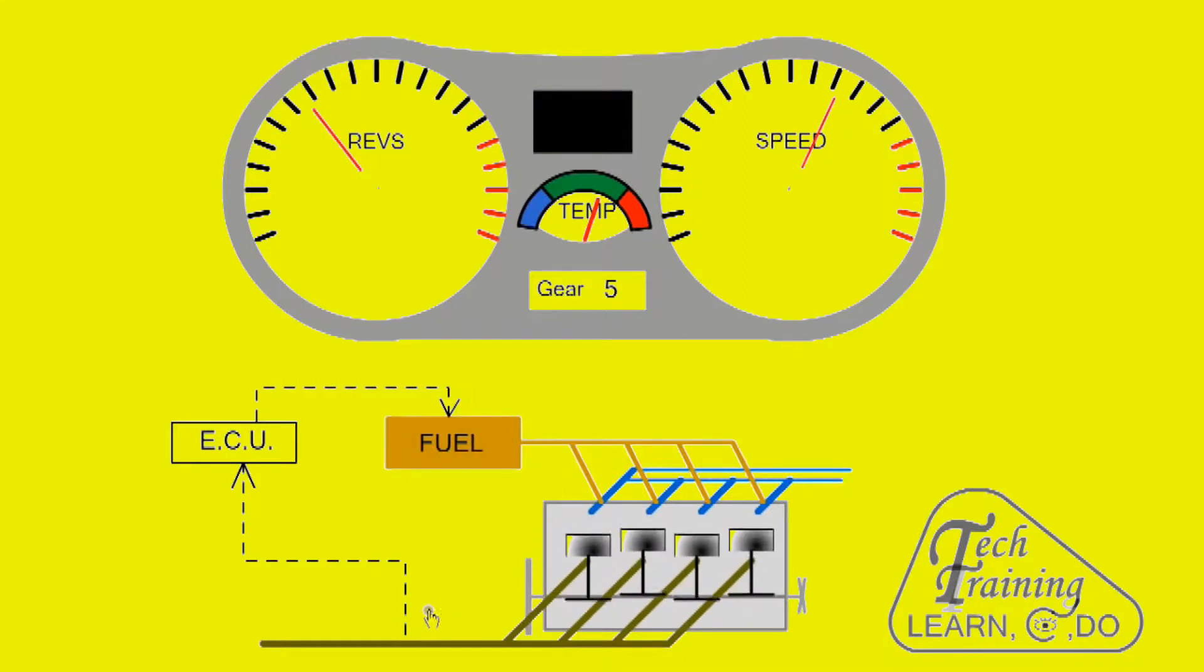If the lambda probe should fail, the control system will revert to open loop control, as there is no feedback from the oxygen sensor. It will alert the driver via the engine management light. Fuel consumption and emissions will be higher, therefore the car should be taken to a garage for repairs.